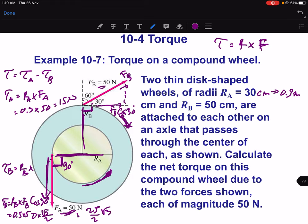So tau, the net torque or tau total equal to tau A minus tau B. Tau A is 15, tau B is 25 over 2 times square root 3.